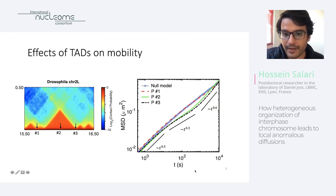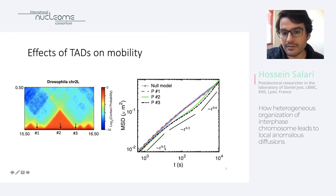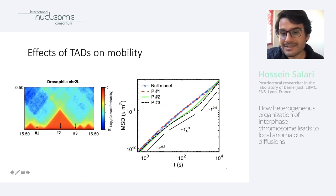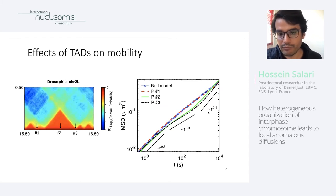Specifically, we see a non-monotonic behavior in the evolution of the diffusion exponent. At shorter time scales, it starts at 0.5, which is expected. At intermediate times, it is less than 0.5. And at larger time scales, it is higher than 0.5, which is totally interesting in terms of polymer physics.